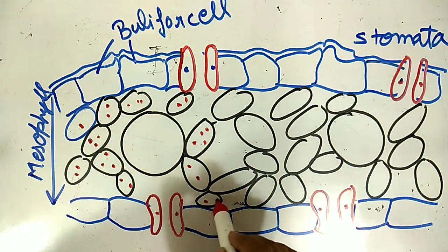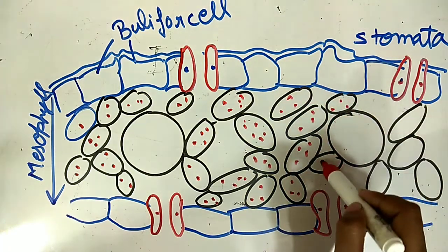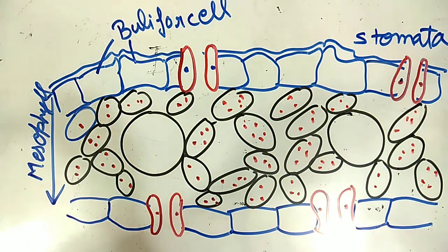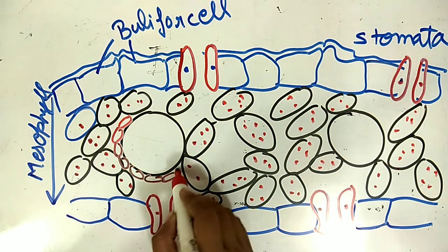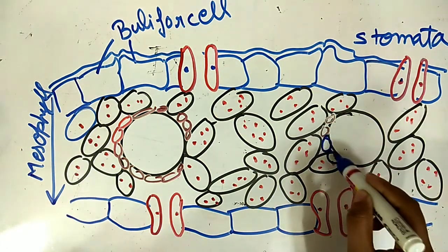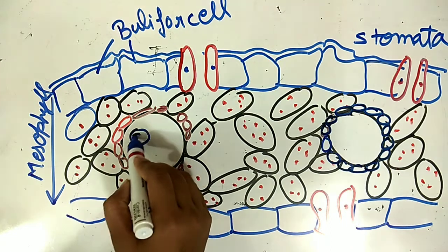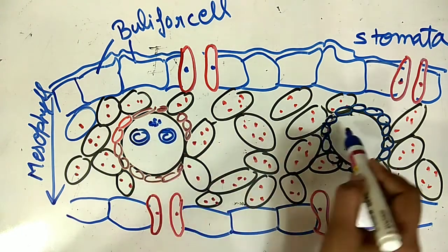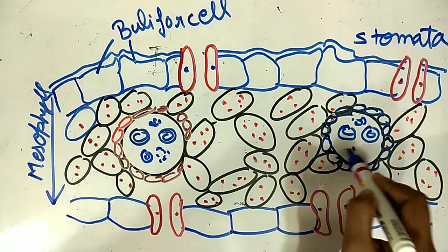Mesophyll cells present होते हैं जो rich मात्रा में बहुत photosynthesis करके food formation करते हैं. Third heading है vascular bundle — isobilateral leaf में vascular bundle veins पर बड़े होते हैं और इन पर bundle sheath present होता है. Bundle sheath starch cells का बना होता है; इनके भीतर xylem vessels और phloem present होता है.